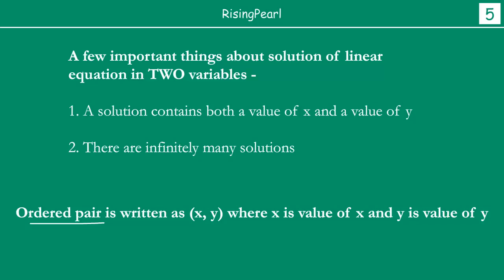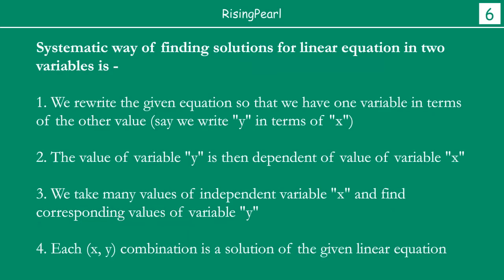Now we will highlight the step by step way of solving a linear equation in two variables. The systematic way of finding solutions - until now we have seen that randomly we were taking values of x and trying to find out value for y. The systematic way is this: we rewrite the given equation so that we have one variable written in terms of the other variable.